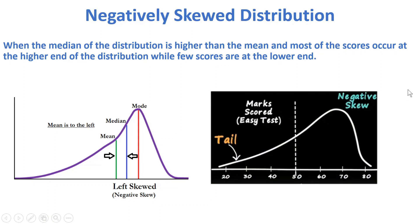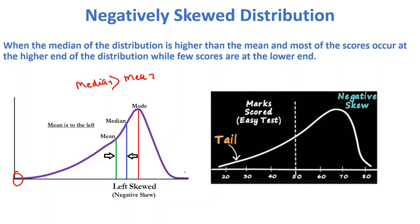Now, the negatively skewed distribution is just the opposite of the positively skewed distribution. Here the mean is less than the median — whereas in positively skewed the mean is greater than the median, in negatively skewed the median is greater than the mean. This is the lower end and this is the higher end.